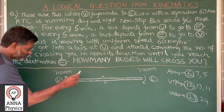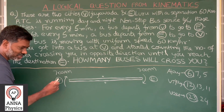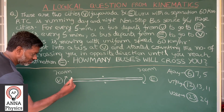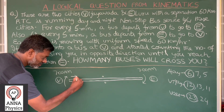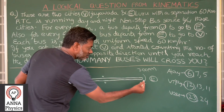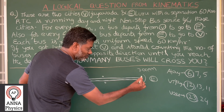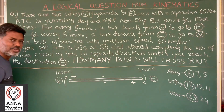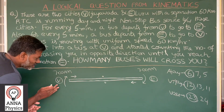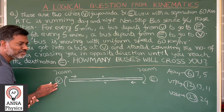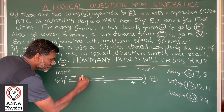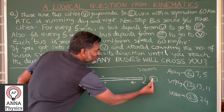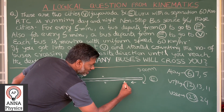Five minutes before your arrival — that is 6:55 a.m. — one bus departed. Where is that bus? It is obviously on the way. Similarly, from Eluru also, 6:55 a.m., one bus departed, and it is on the way in the opposite direction. What about the bus that departed 10 minutes before your arrival — 6:50 a.m. — that bus is ahead of the 6:55 bus on the road. Similarly, the 6:50 a.m. bus from Eluru is ahead of that one.